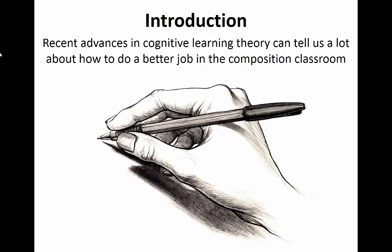We can learn a lot from cognitive learning theory about how to do a better job in the composition classroom. In the following presentation, I alternate between describing some of the latest conclusions made by cognitive psychologists about the best methods to help students gain and retain knowledge, and practical suggestions for how to implement those ideas when teaching composition at the college level, although many of these conclusions would also apply to the high school level.